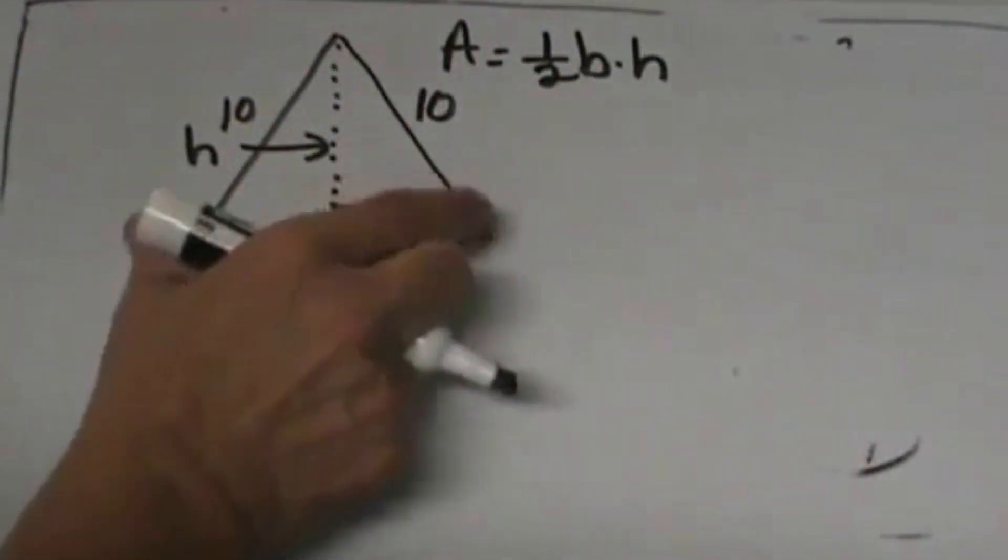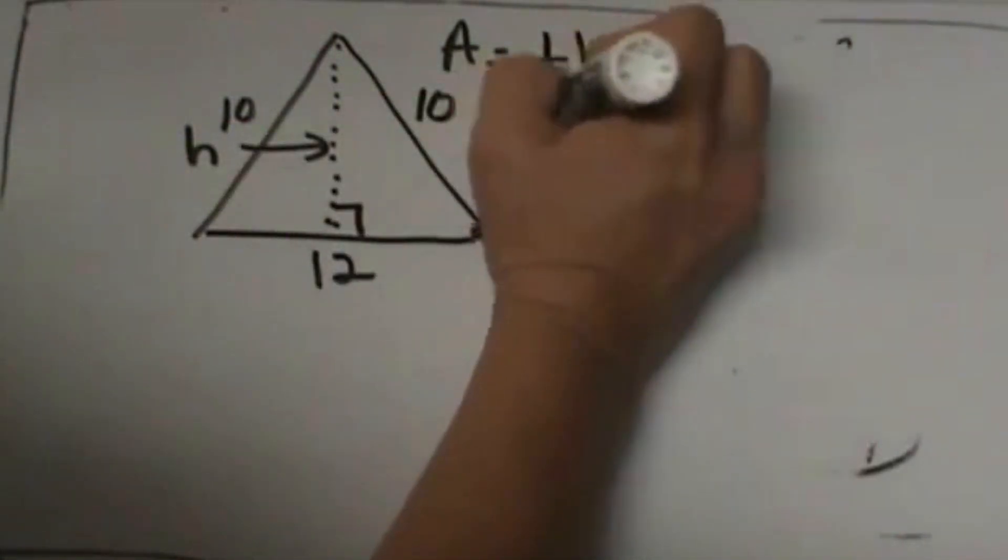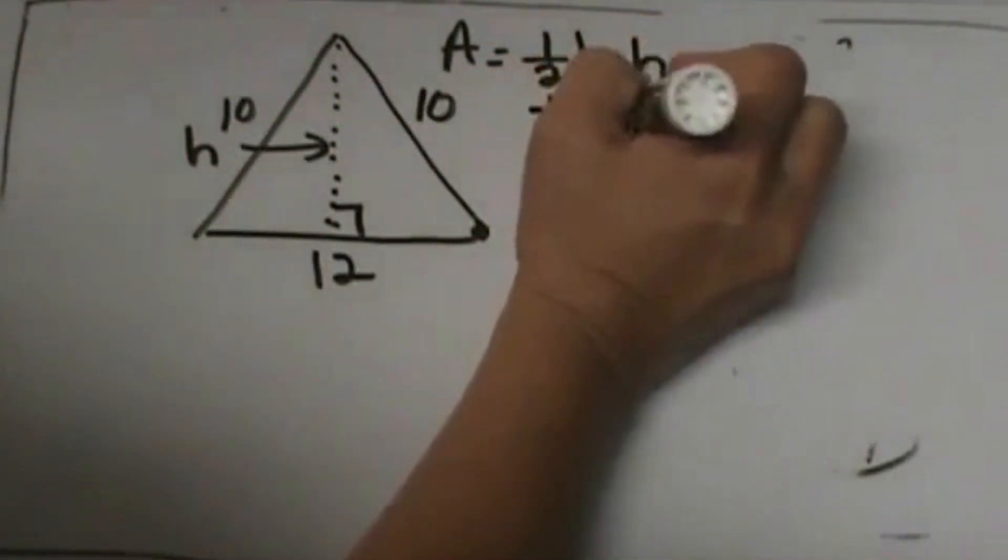Our base in this one, since we drew the height down this way, means 12 is our base. So I'm going to put a 12 in here.